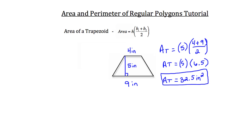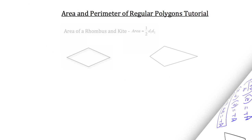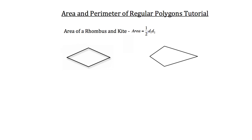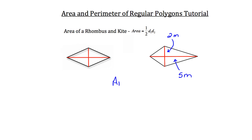Now let's move on to solving for the area of a kite or a rhombus. The area of a rhombus and a kite can both be solved using the formula: one half times diagonal one times diagonal two. I'll indicate the diagonals of the rhombus on the left and the kite on the right with red lines. For the kite on the right, if this diagonal had a length of two meters and the longer diagonal had a length of five meters, you use the formula: one half times two times five.